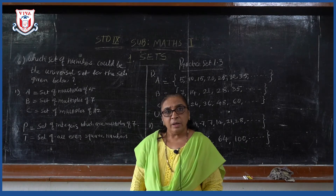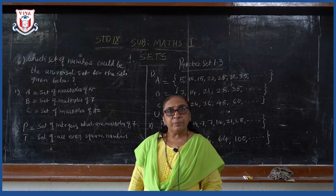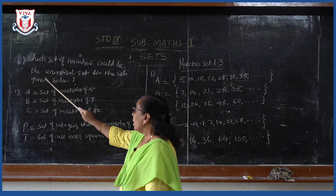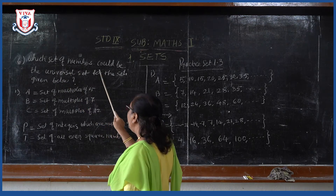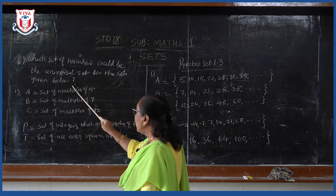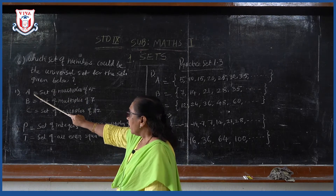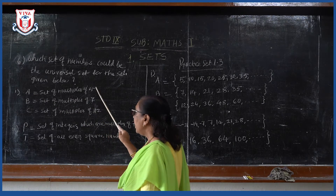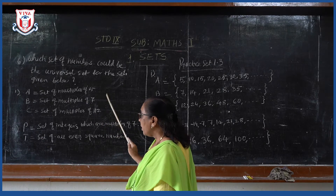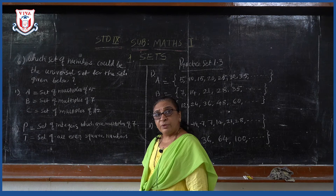One more example from practice set, we will take now — that is the sixth example. Which set of numbers could be the universal set for the sets given below? See the first part: A is a set of multiples of 5, B is a set of multiples of 7, and C is a set of multiples of 12.